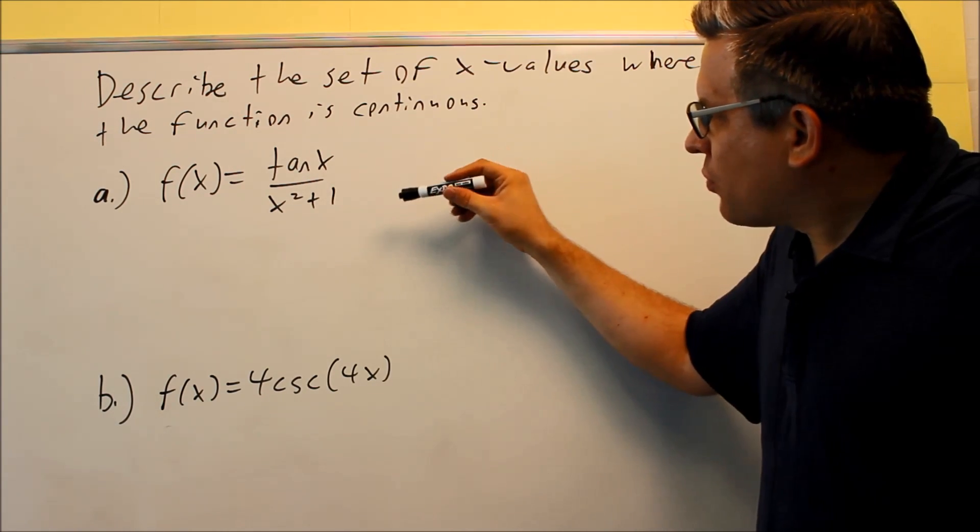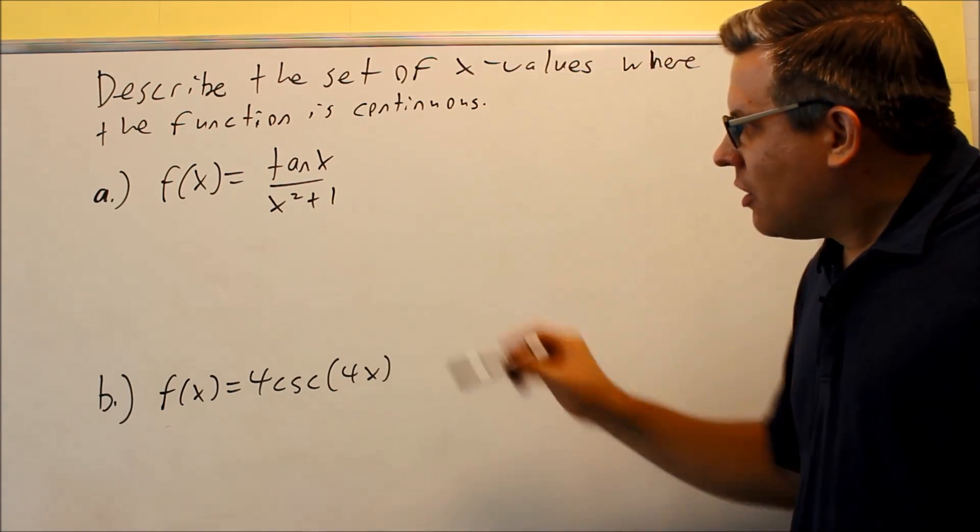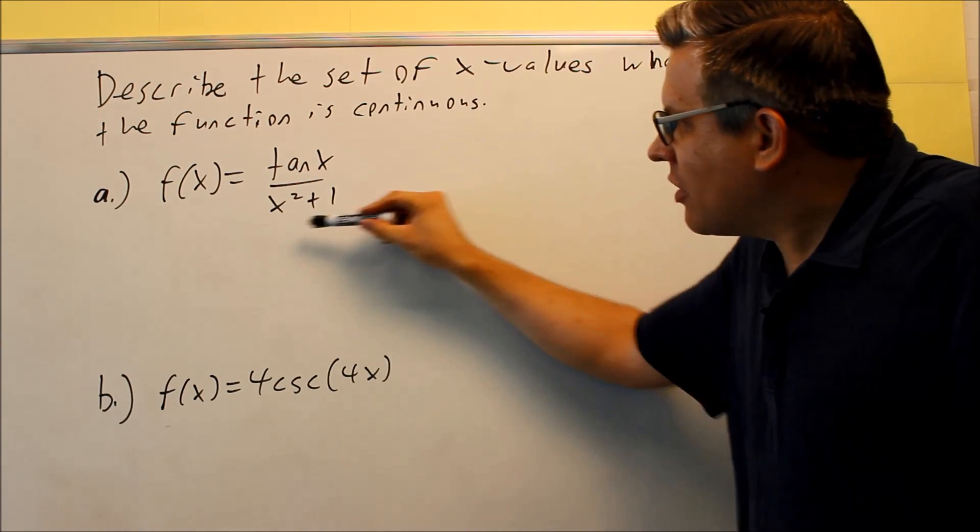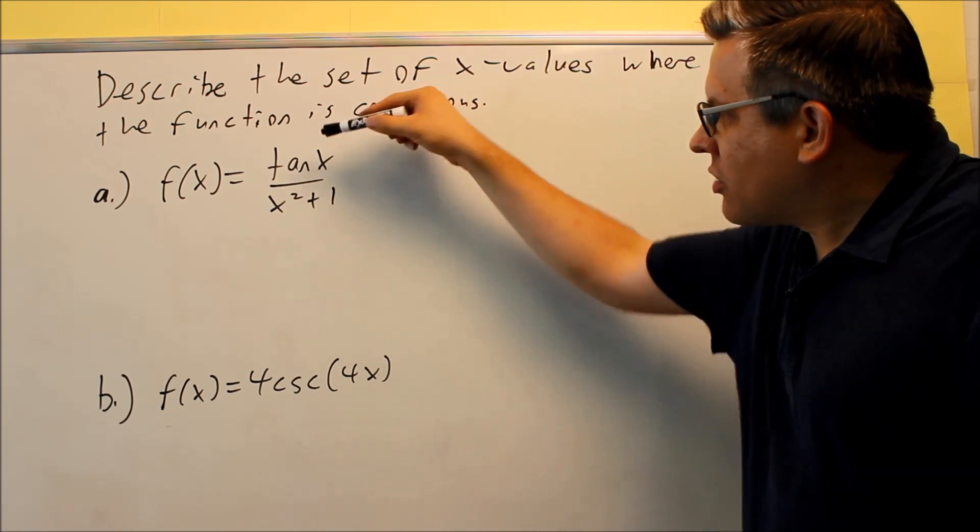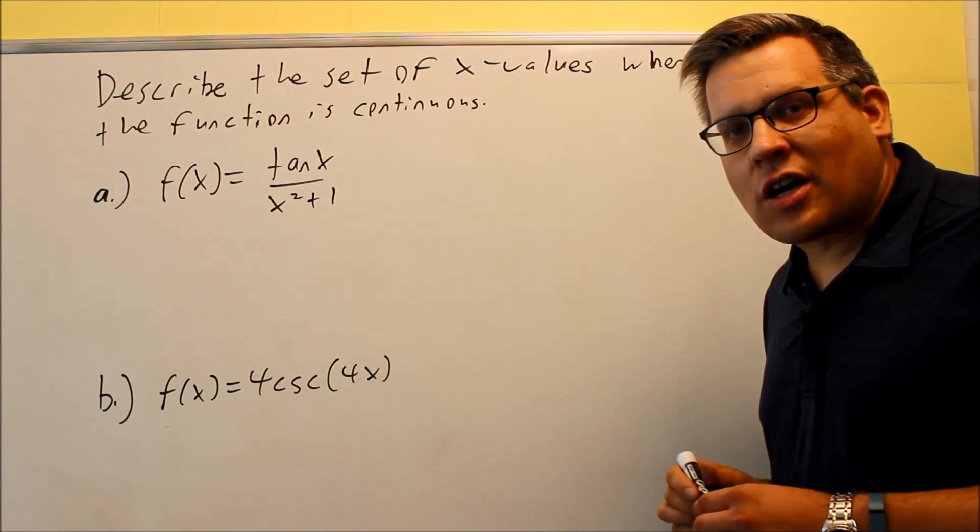Now, the previous problem we talked about that nothing makes the bottom zero if you have x squared plus one. I can't put any number in there to cause that bottom to be zero, so I'm not going to have any discontinuities as a result of the bottom. So we're going to take a look at the top, we're going to look at tangent and see if that gives us any places where it's not continuous.